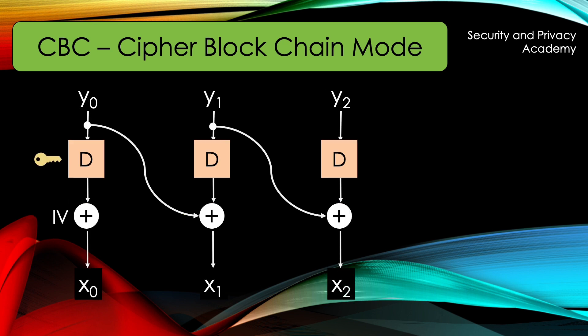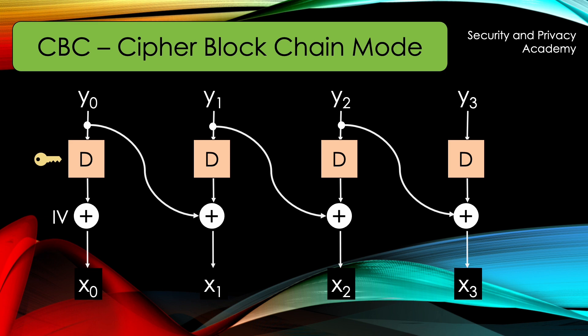To decrypt, you just reverse the operation by using Y0 after decryption of Y1, for example, and the initializing vector to decrypt Y0. Faulty ciphertext blocks only affect themselves and only the following block. As you can see, if Y1 is corrupted, only X1 and X2 suffer, since Y3 is fed by Y2 and is independent of Y1. This is also an issue regarding security, as an attacker can inject ciphertexts without it being noticed.